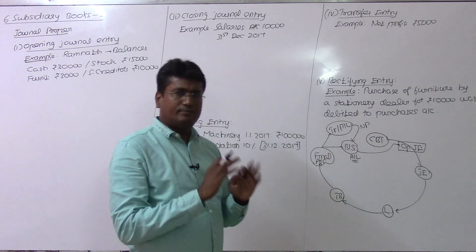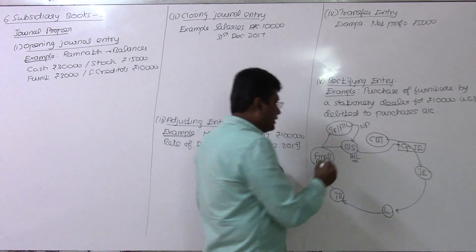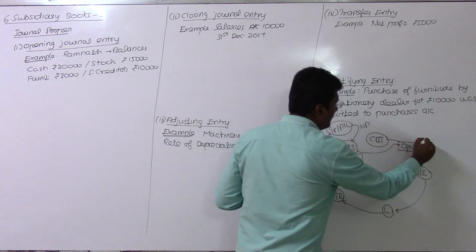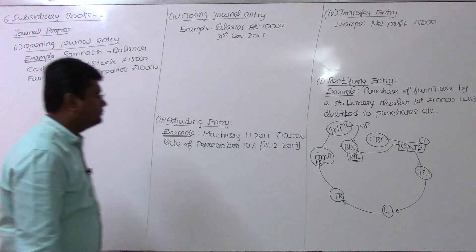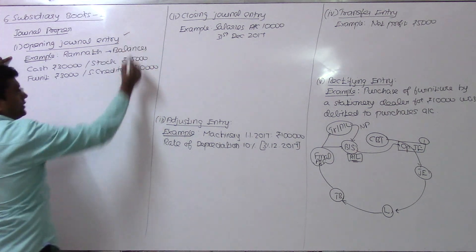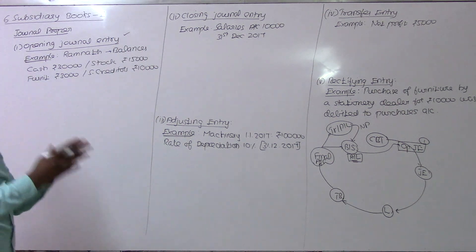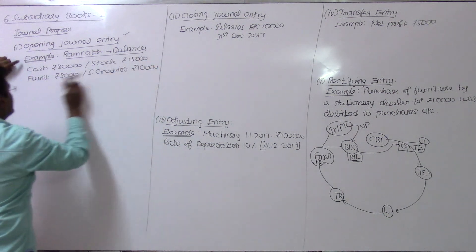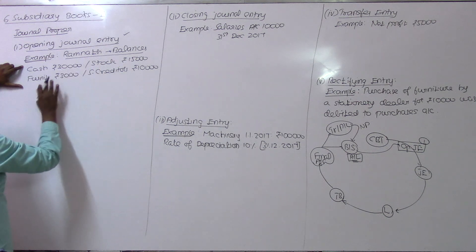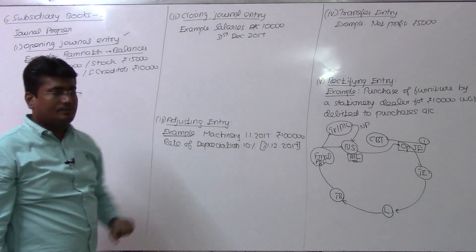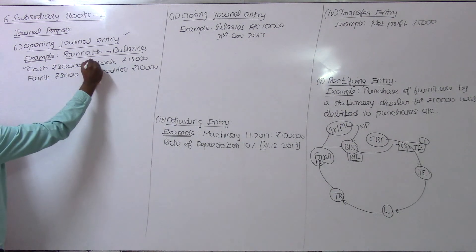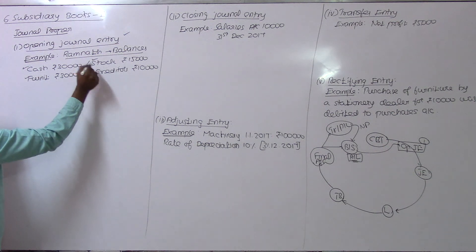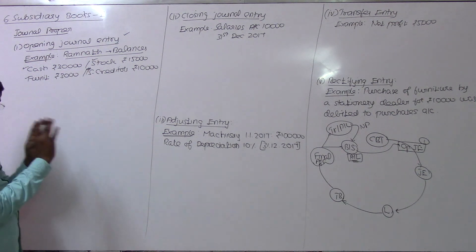This is the first part, named as the opening journal entry. From the previous year's balance sheet, we create an opening journal entry. For example, Ramanath has balances: cash, stock, furniture as assets, and sundry creditors as liabilities. The rule is: all assets are debited, and liabilities are credited. The difference goes to capital. That is the opening journal entry.